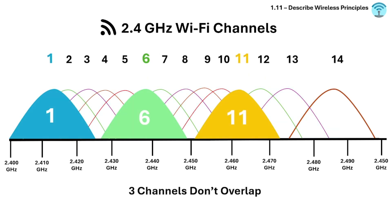Only three channels don't overlap: channel 1, 6, and 11. These channels are spaced far enough apart that their signals don't interfere with each other.